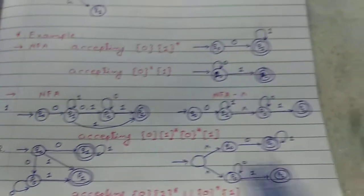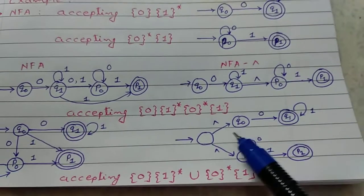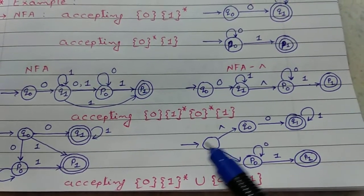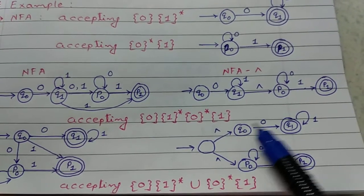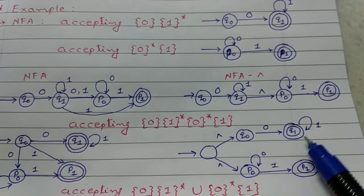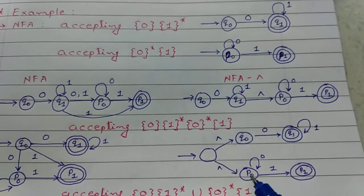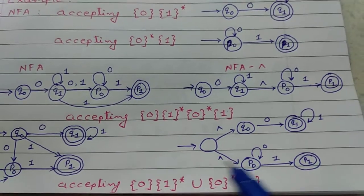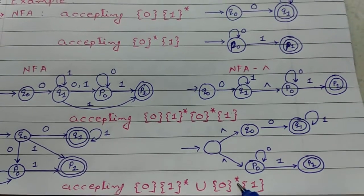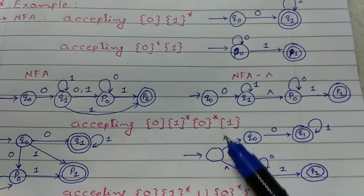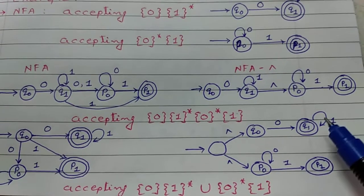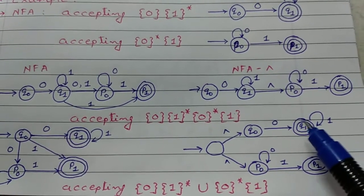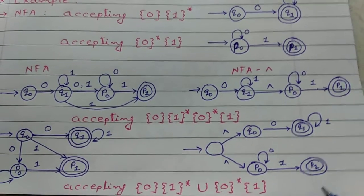For NFA Epsilon, here starting state with Epsilon. Q0 to 0, then 1 star. P0 to 0, P0, then 1. Here, 0,1 star union 0 star, 1. After 0,1 star, if I consider 1, then it is also a final state.